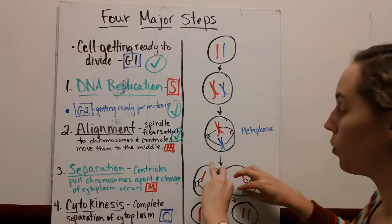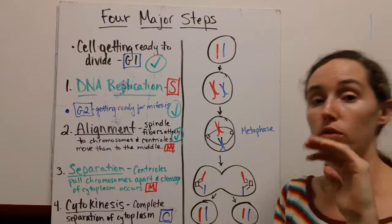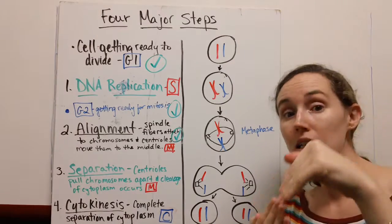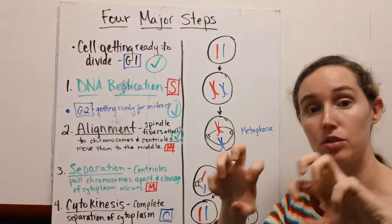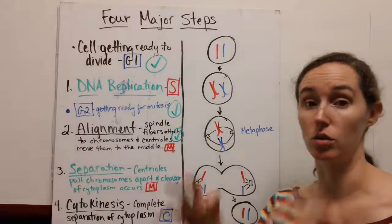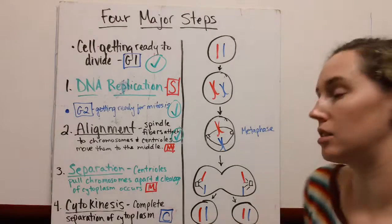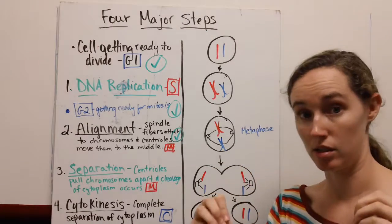Then finally, once we've got our chromosomes to the side, our cytoplasm is going to complete that division. Cells are going to be unique and separate from each other. Well, genetically identical, but they're going to be separate from each other. That process of splitting the cytoplasm is called cytokinesis.